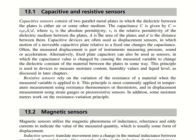Now let's discuss a few different types of sensors. First, capacitive and resistive sensors — both are electrical sensors. Both capacitive and resistive sensors have two parallel metal plates in which a dielectric medium is generated between the plates. It can be air or any other dielectric medium. The capacitance is given by C = ε₀εᵣA/d, where ε₀ is absolute permittivity, εᵣ is relative permittivity of the dielectric medium, A is the area of the plates, and d is the distance between the plates.